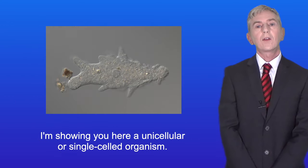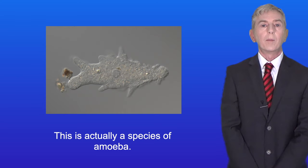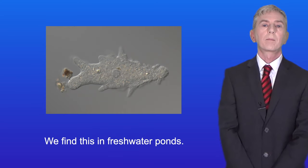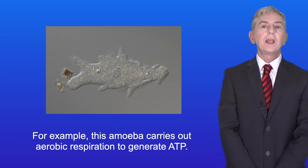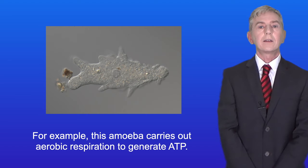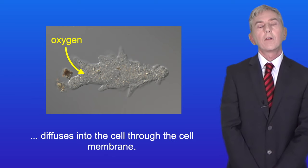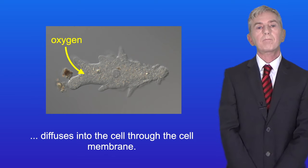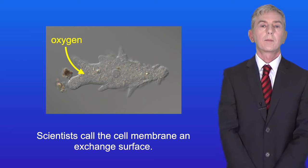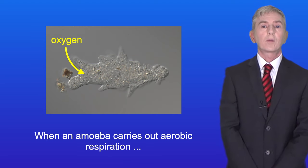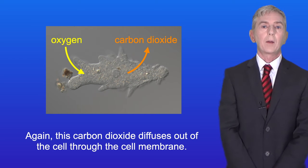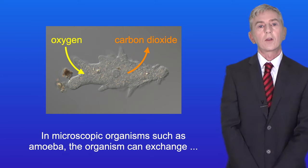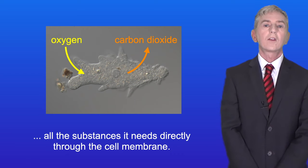Here is a unicellular or single-celled organism — a species of amoeba found in freshwater ponds. All organisms are constantly exchanging materials with their environment. This amoeba carries out aerobic respiration to generate ATP, and the oxygen needed diffuses into the cell through the cell membrane — which scientists call an exchange surface. The carbon dioxide produced also diffuses out through the cell membrane. Microscopic organisms like amoeba can exchange all the substances they need directly through the cell membrane, for two reasons.